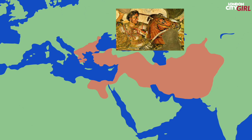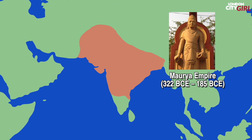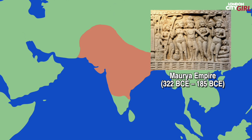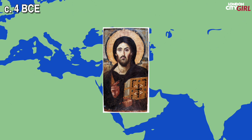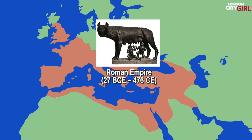From 322 BCE most of South Asia was united to the Maurya empire by Chandragupta Maurya and the region went on to flourish under the Indian emperor Ashoka the Great. In China the first imperial dynasty was founded, the Qin dynasty which lasted only 15 years and was followed by the Han empire. Around 4 BCE Jesus was born, a Jewish preacher who would go on to become the central figure in Christianity. In Europe around 27 BCE the Roman empire was founded.